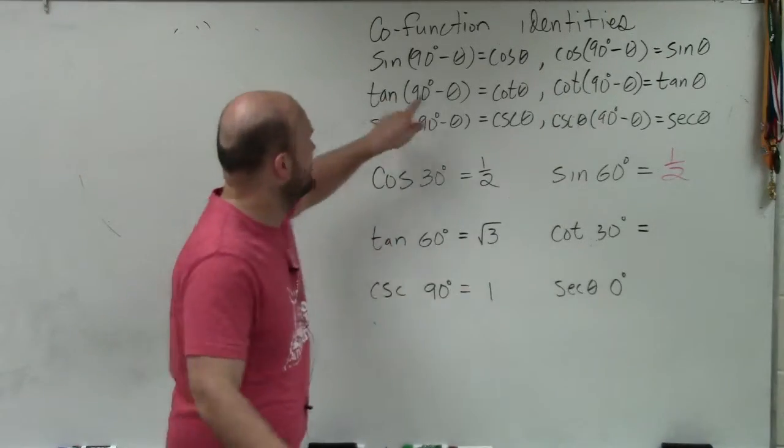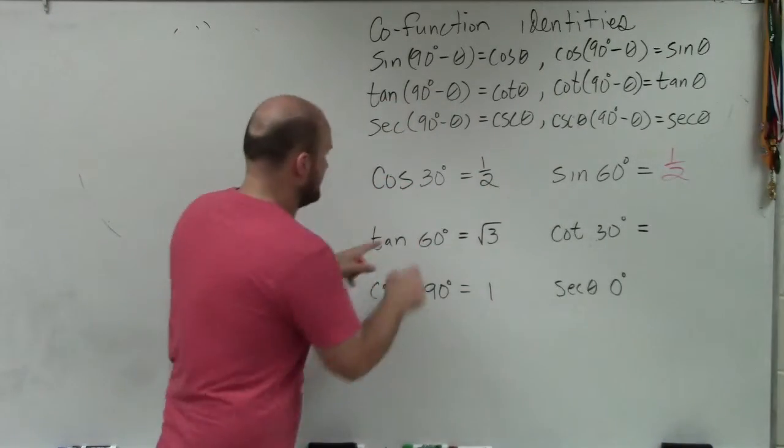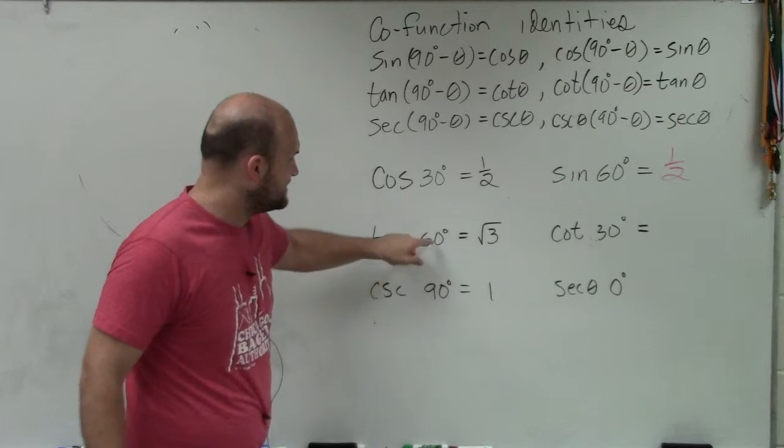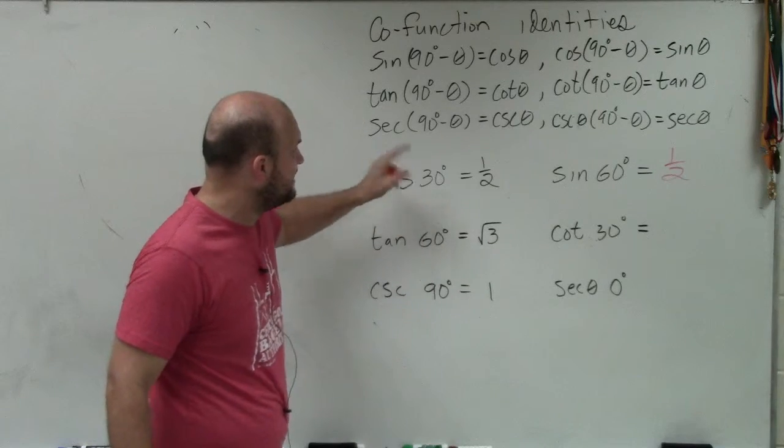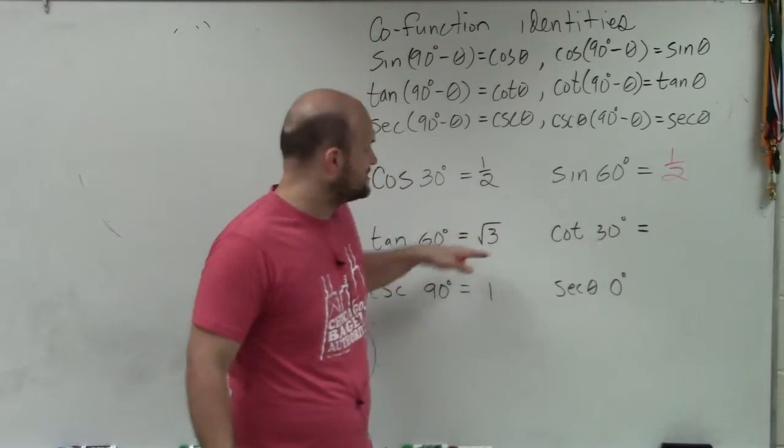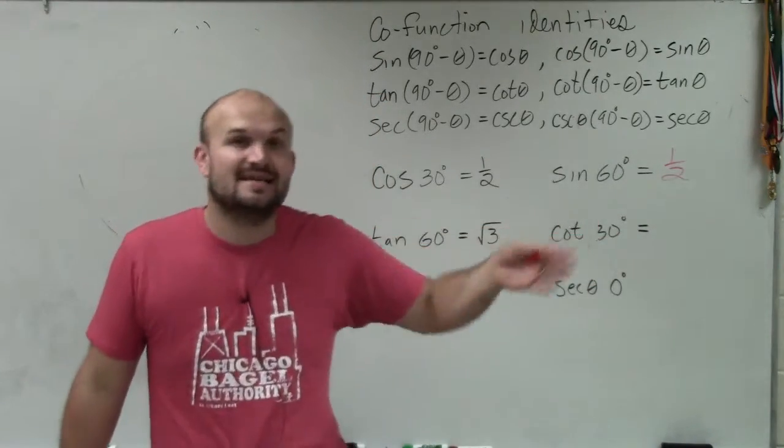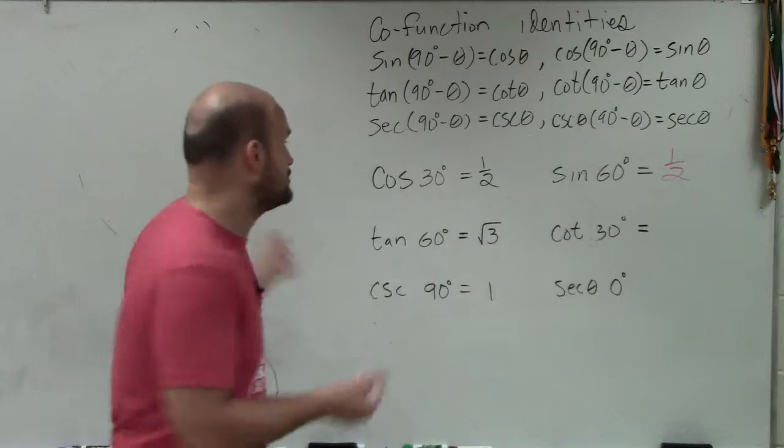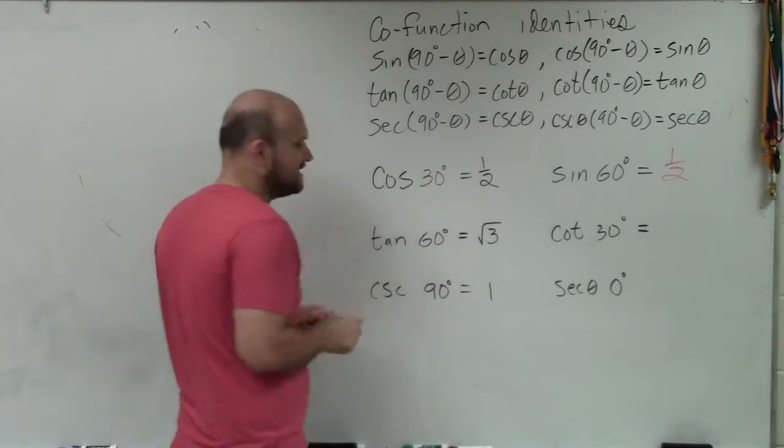And then we see tan and cotangent - those are differences. So if theta is 60 degrees, that means 90 minus theta, the cotangent of that would be the same as this. Well, 90 minus 60 is going to be 30 degrees. So the cotangent of 30 degrees is the same thing as the tangent of 60.